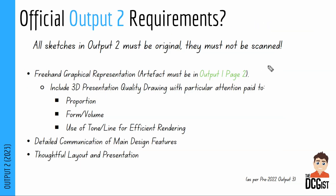Moving on to the official requirements. The first and most important thing to bear in mind in output 2 is that all the sketches must be the original sketches. In other outputs, apart from output 6, you'll be able to sketch and then scan in your sketches, which means you'll be able to resize them. Whereas in output 2, because they're the original sketches, you won't be able to resize them after. So you need to think about that before you start.